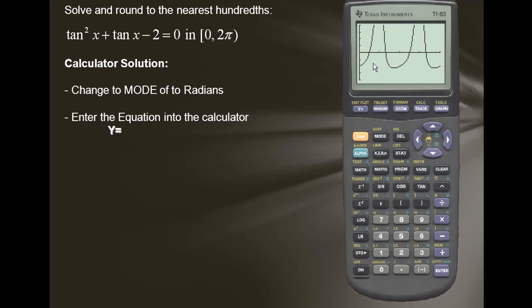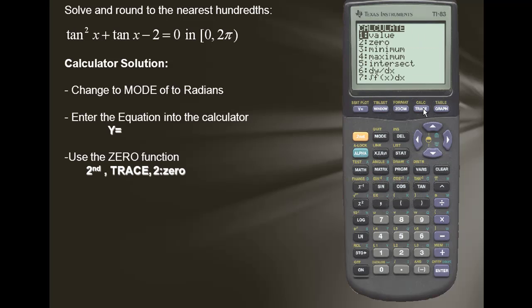Next we want to calculate the intercepts or the zeros. We'll use the zero function, which is located within the calculate function. So we'll use second and trace, which is the calculate function. We want the zero, so I'll choose the zero and press enter.